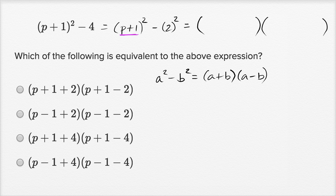So it's going to be p plus one. So p plus one here, p plus one here. And then plus b and minus b. In this case b, in this case b is two. So plus two and then minus two.